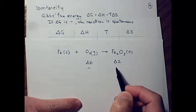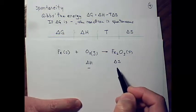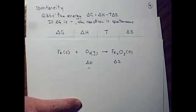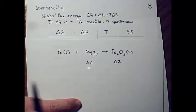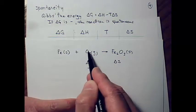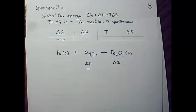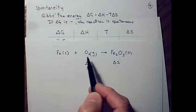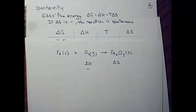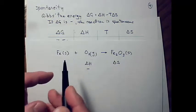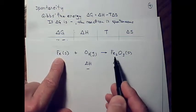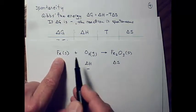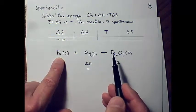Two things becoming one thing is more ordered. Also, oxygen gas has particles that aren't stuck together — hundreds of thousands of molecules all separated. Combining them into a solid structure, even a loosely structured rust, means going from highly unstructured to more structured. So overall, we're becoming more ordered as we go from reactants to products.